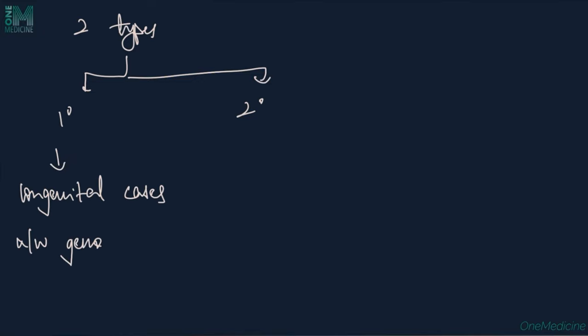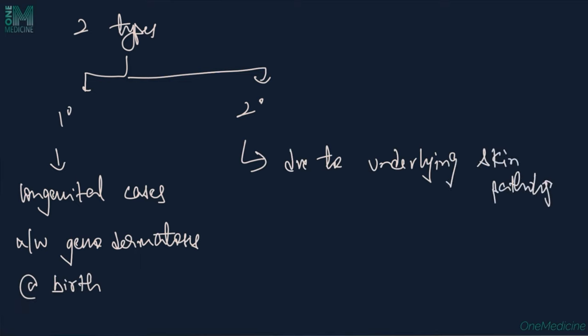Milia are of two types: primary and secondary. Primary milia is seen in congenital cases, associated with certain genodermatoses, and mostly present at birth. Secondary milia occurs due to underlying skin pathology, certain drugs, skin trauma during dermabrasion, or radiotherapy.